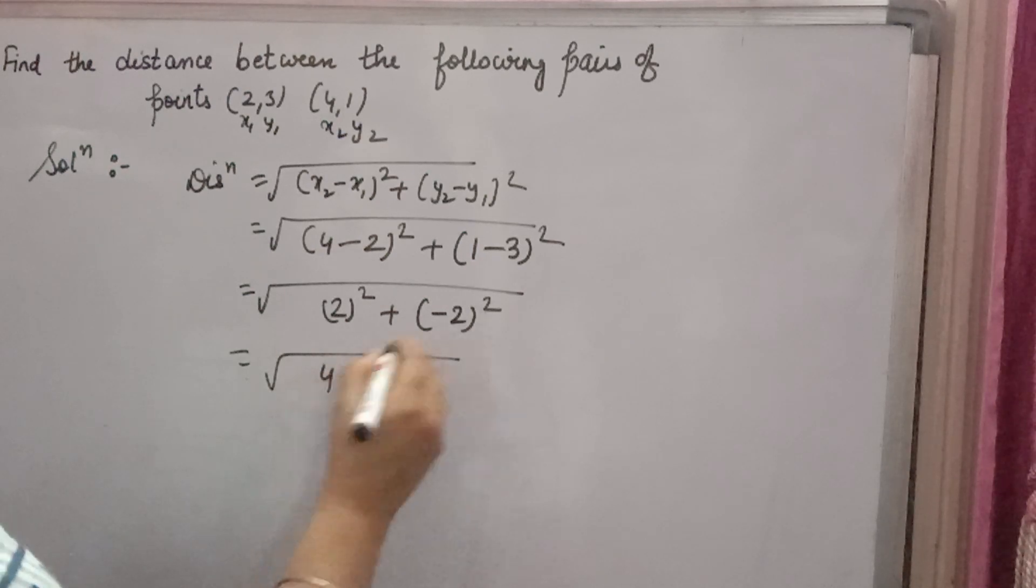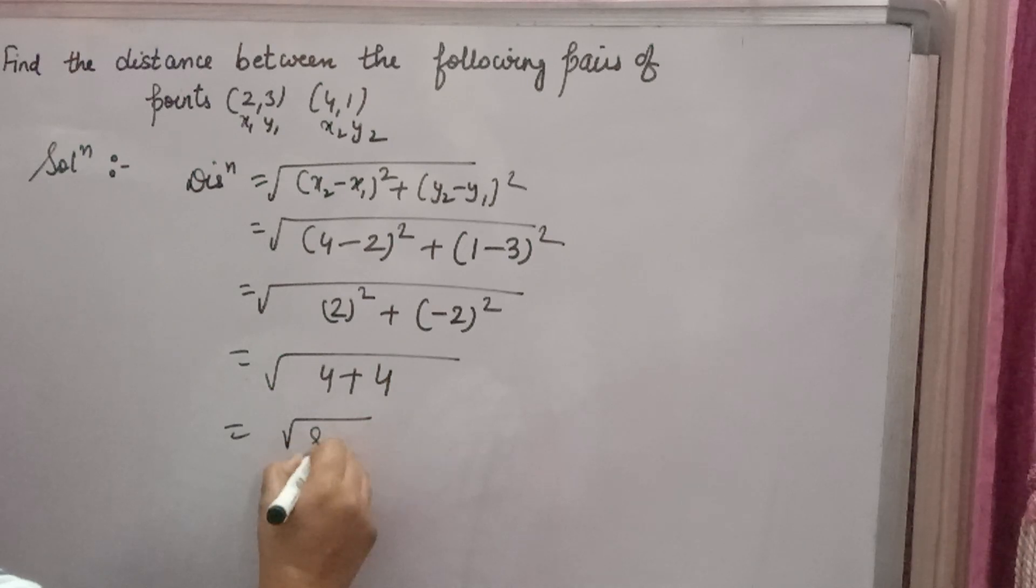2 square is 4, minus 2 square is also 4 because square of negative number is positive only. 4 plus 4 is 8.